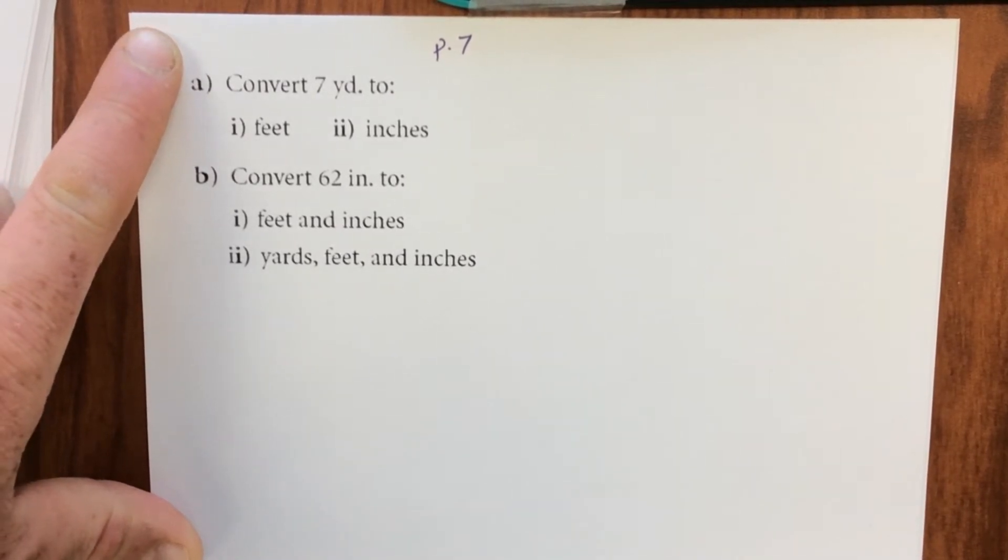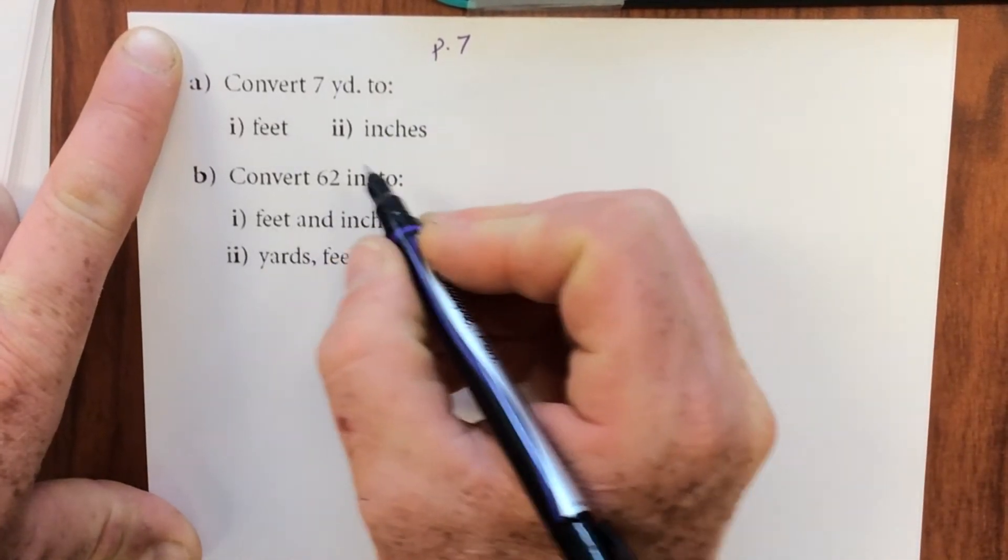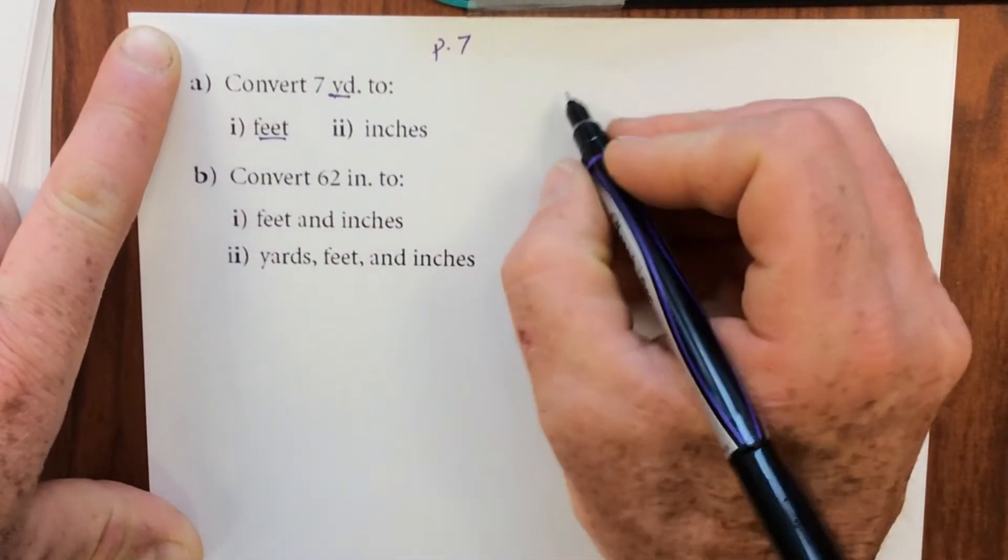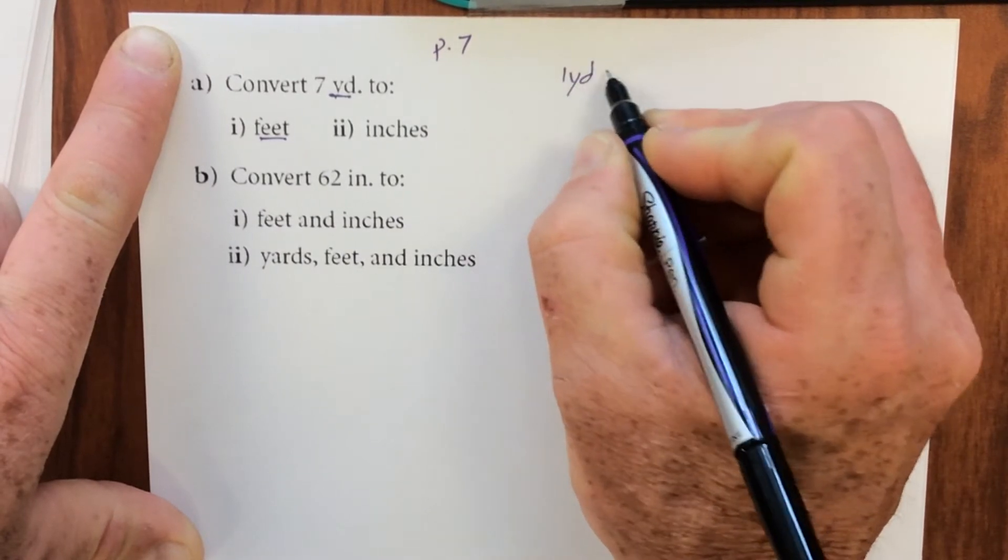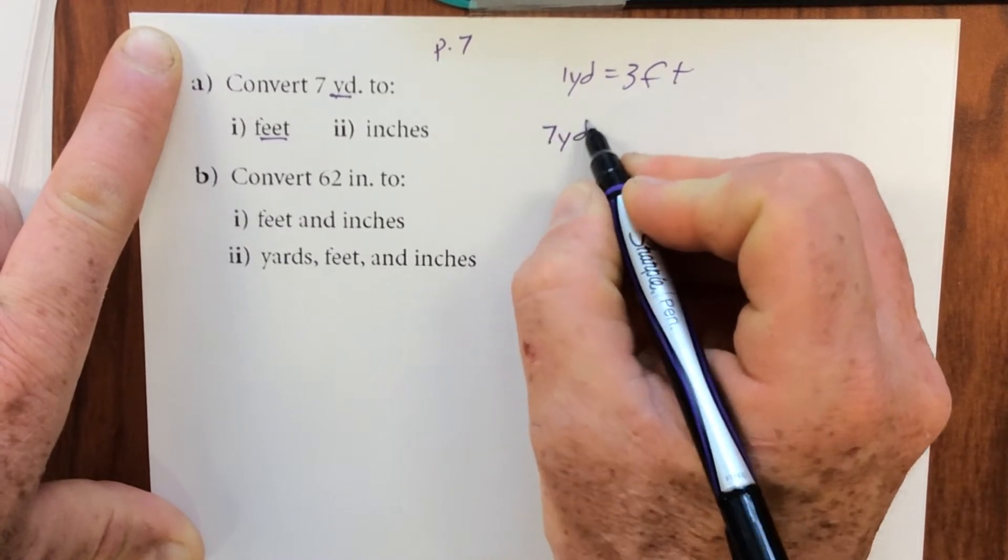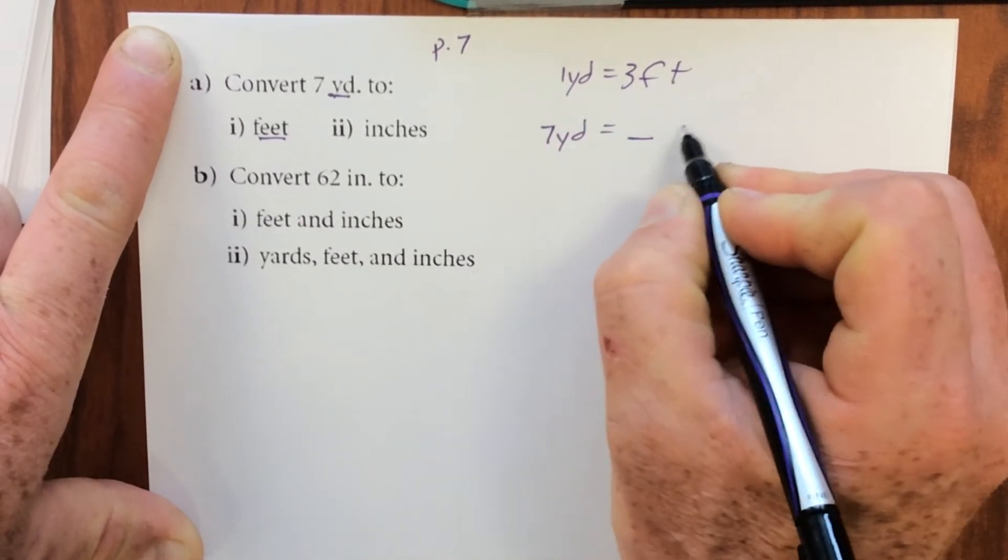So we have on page 6 what those conversions are. First question is asking us to convert yards to feet. We know that one yard equals three feet. So if I have seven yards, how many feet do I have?